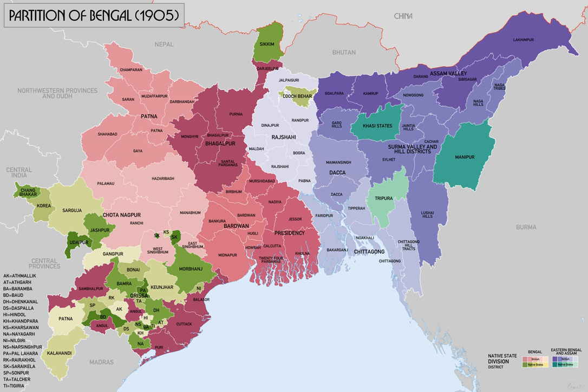The Governor-General in Council is further pleased to declare and appoint that upon the constitution of the said province of Eastern Bengal and Assam, the districts of Dhaka, Mymansingh, Faridpur, Bakhargunj, Tipura, Nokali, Chittagong, the Chittagong Hill Tracts, Rajashahi, Dinajpur, Jalpigari, Rangpur, Bogra, Pabna, and Malda which now form part of the Bengal Division of the Presidency of Fort William shall cease to be subject to or included within the limits of that division, and shall thenceforth be subject to and included within the limits of the Lieutenant-Governorship of the province of Eastern Bengal and Assam.